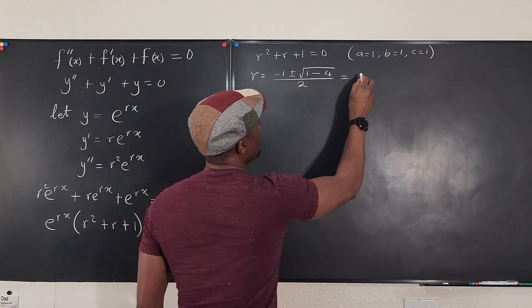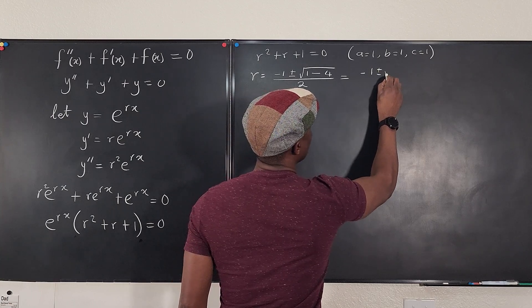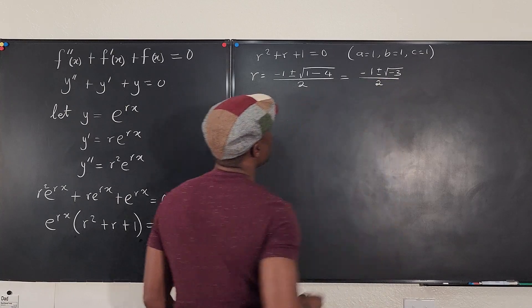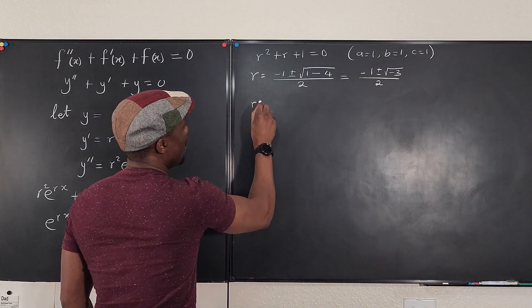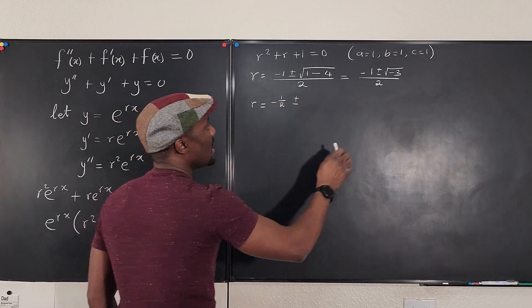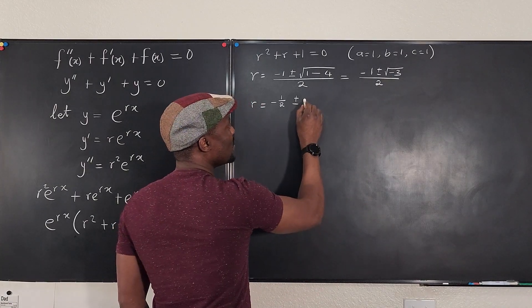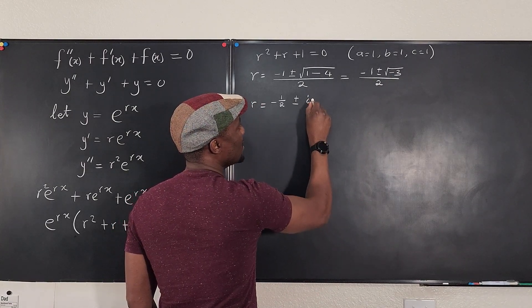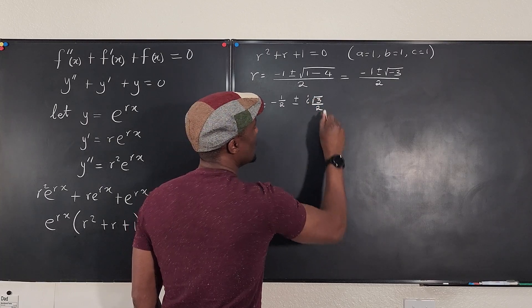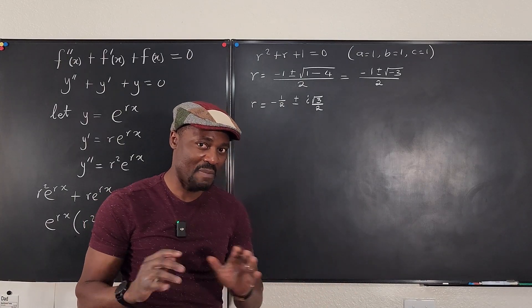So here we get negative one plus or minus the square root of minus three over two. And that tells us that r is negative one over two plus or minus. We know that the square root of negative three is going to be square root of three i. So it's imaginary square root of three divided by two. So our solution has a real part and an imaginary part.